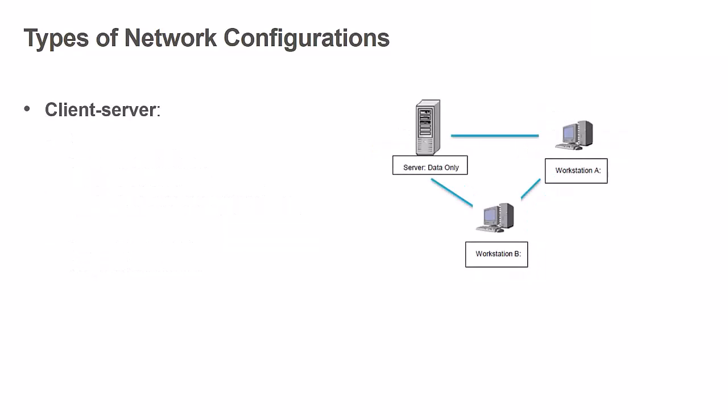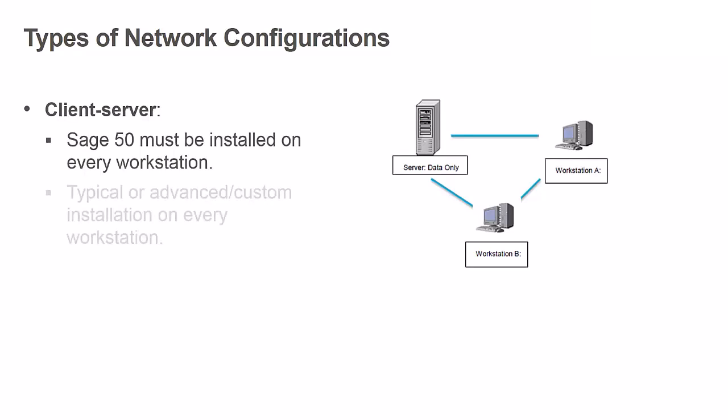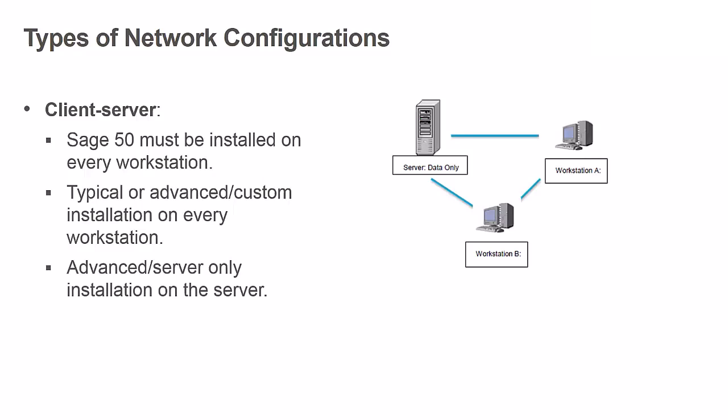The second type of network configuration supported by Sage50 is a client-server environment. Client-server networks are commonly used by small to medium businesses that have access to a dedicated server. In a client-server environment, workstations and a dedicated server are connected to the same network. Certain files are stored on the server in a shared location, and the server is not used as a workstation. The Sage50 program must be installed on every workstation. A typical or an advanced custom installation can be performed on every machine. Because only some components of the program are required on the server, an advanced server-only installation can be performed there. The Sage50 company data will be stored in a shared location on the server, and the other workstations should map a drive to the shared location to gain access to the data.